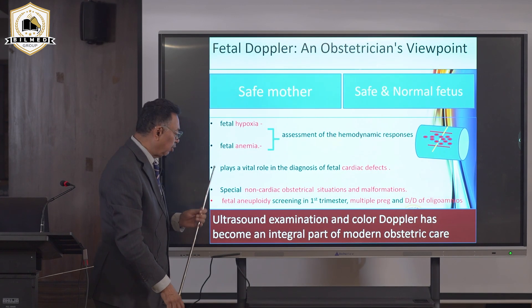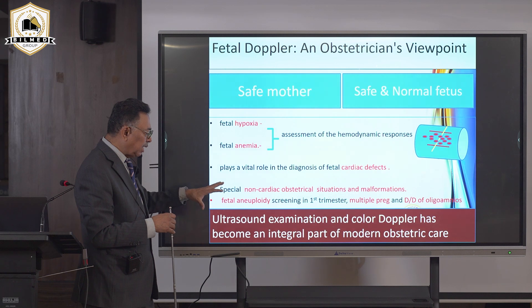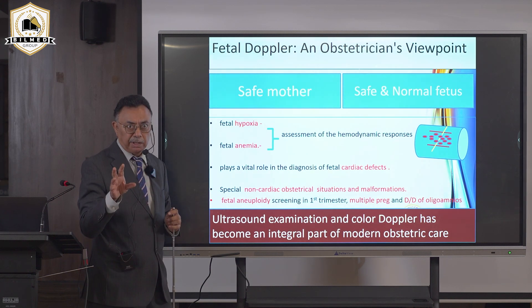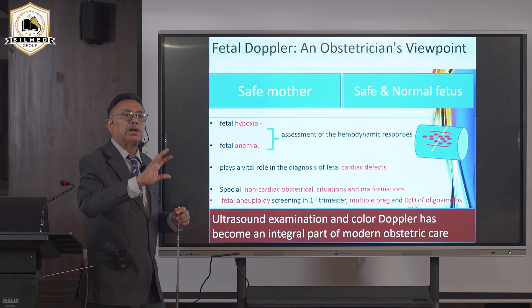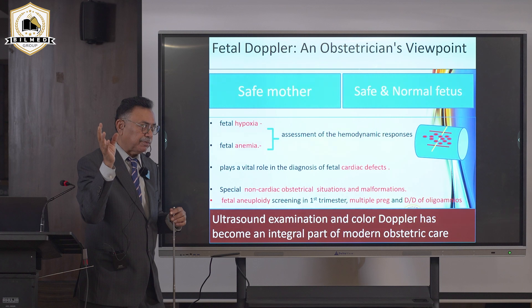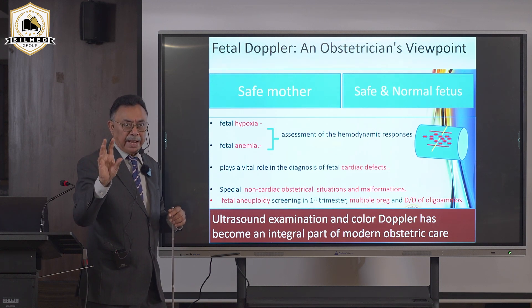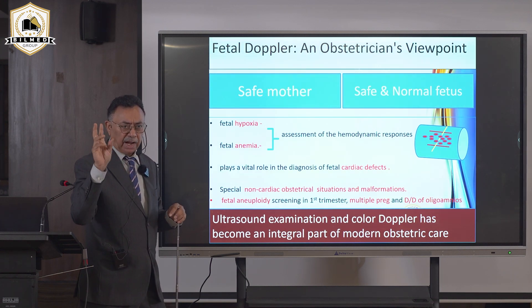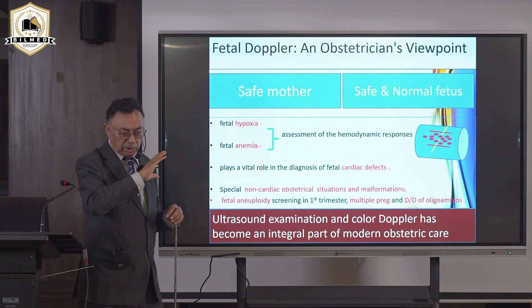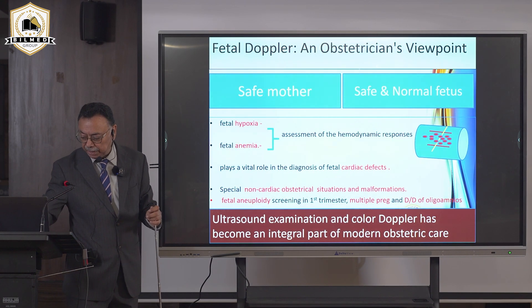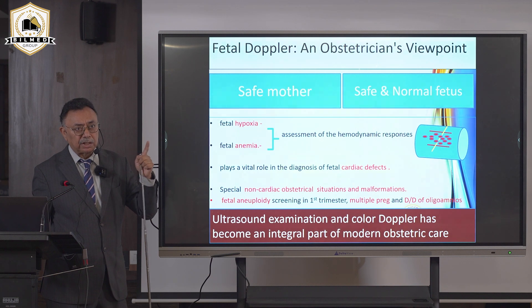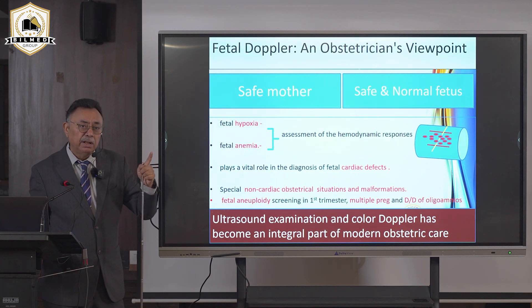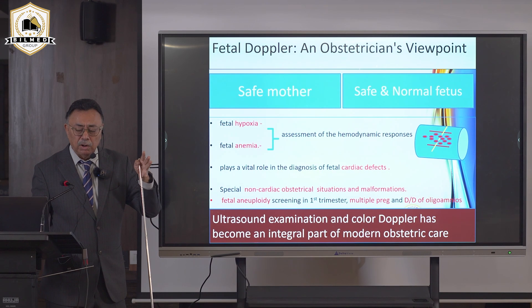Color Doppler has become an integral part of ultrasound examination — you cannot order it only when you suspect a problem. It must be done in all patients: at 13 weeks to assess the ductus venosus for chromosomal anomalies, at 20 weeks to assess complete placental formation, and at 28 weeks for growth retardation or IUGR.